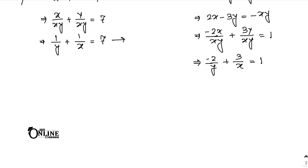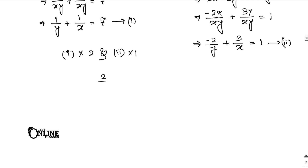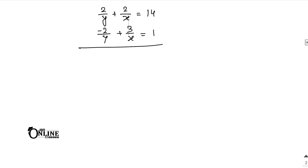Now let equation 1 be 1/y plus 1/x equals 7 and equation 2 be minus 2/y plus 3/x equals 1. Multiply equation 1 by 2: 2/y plus 2/x equals 14. Adding to equation 2, the 1/y terms cancel, giving 5/x equals 15, so x equals 1/3.